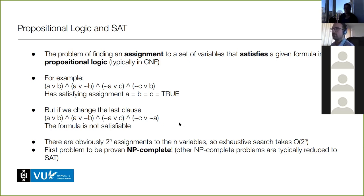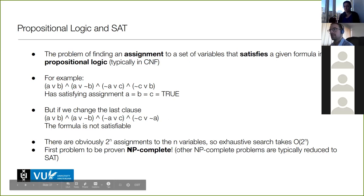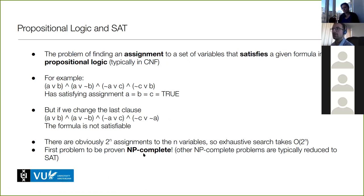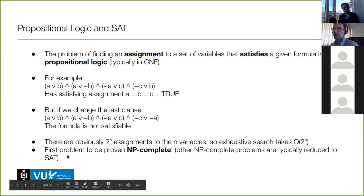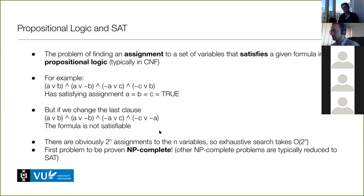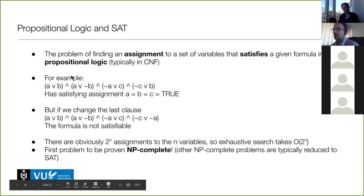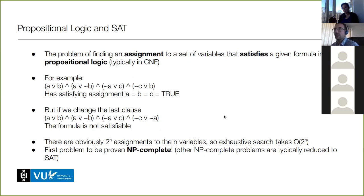SAT is an important problem because it was the first problem known to be NP-complete. This means there is no efficient deterministic way of telling whether any formula is satisfiable. Many other NP-complete problems reduce to SAT, which is why we know they are also NP-complete. A lot of KR research in the 50s had to do with representing world knowledge as propositional logic formulas and checking satisfiability.